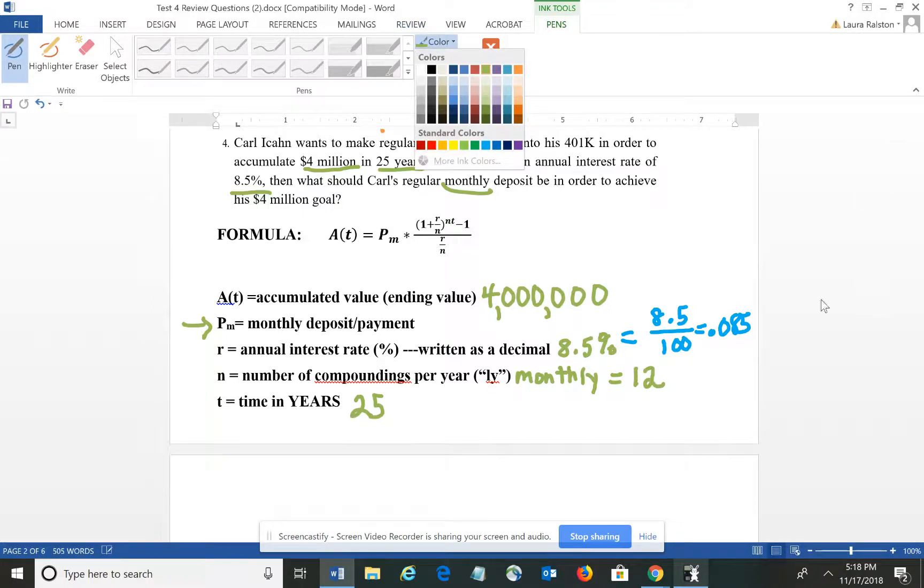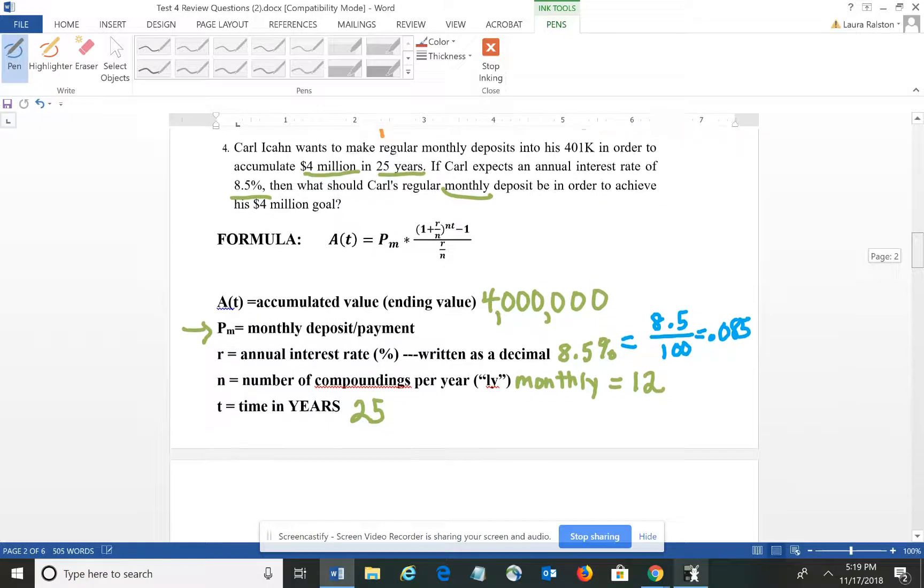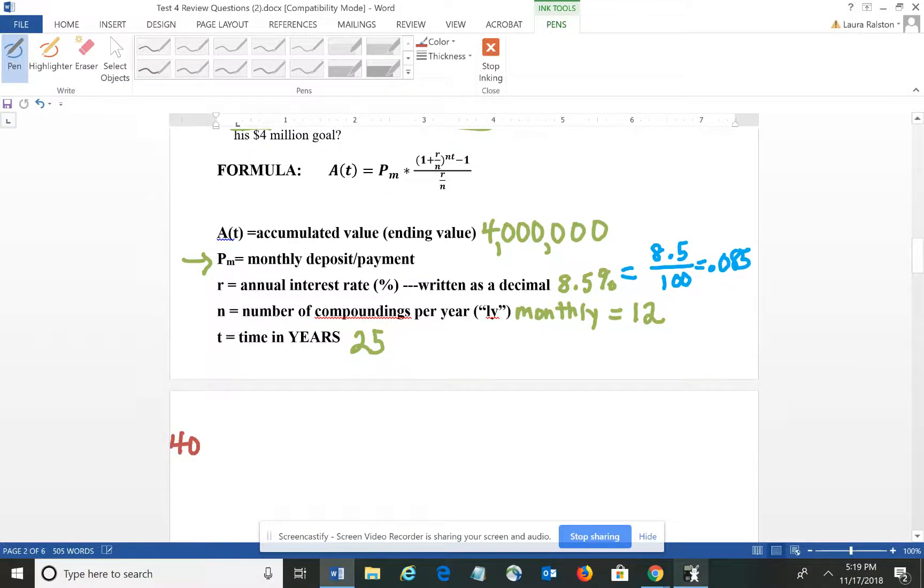And so I'm looking for how much we should deposit each month. So basically at this point, once I've identified all the pieces, it becomes a substitution problem. You plug in the numbers into the equation. So I would have $4 million equals the payment amount that I'm looking for times...